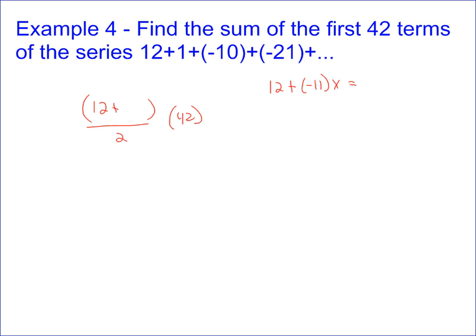41 times negative 11, so we put 41 in there for x, gives you negative 451. And so this is going to equal negative 439. The last term is negative 439.